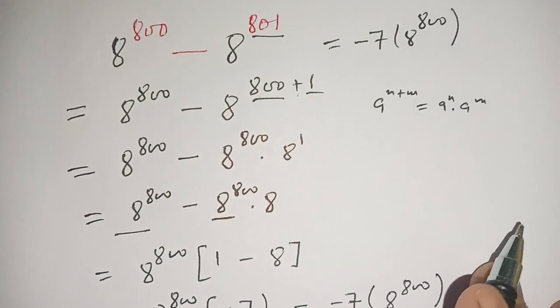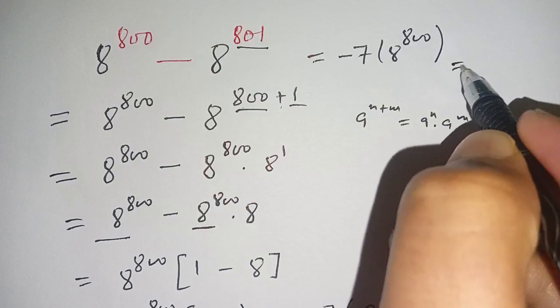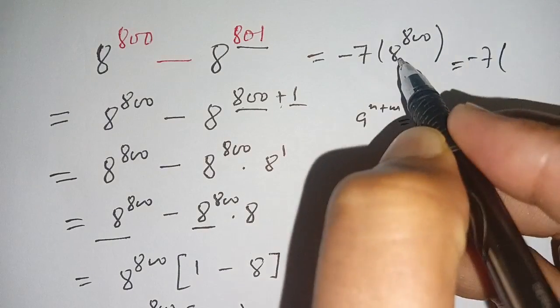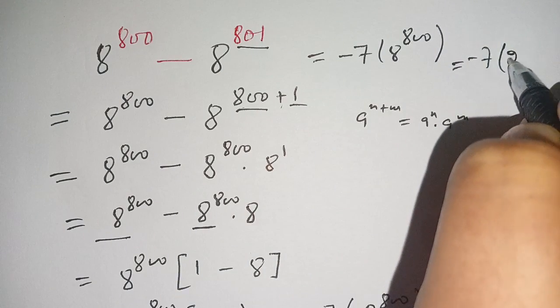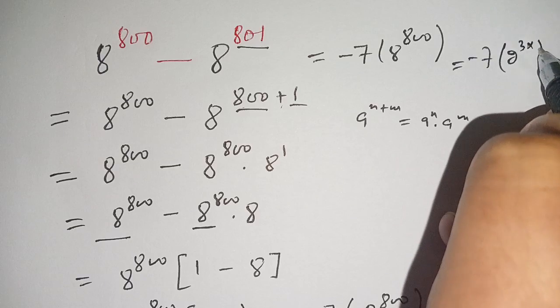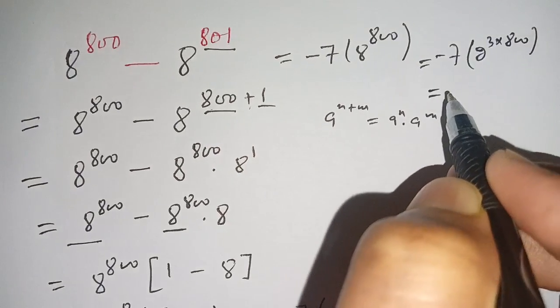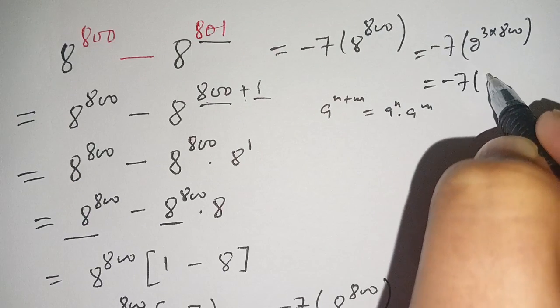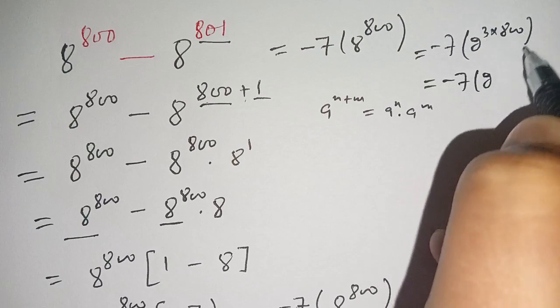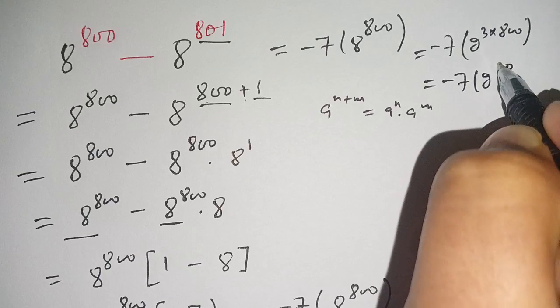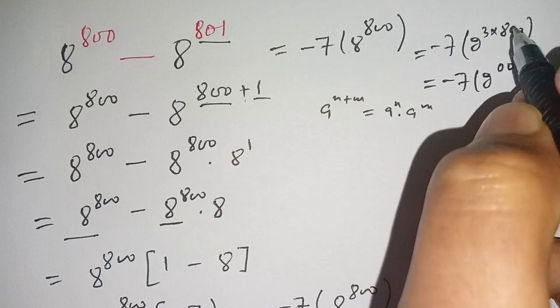We can further simplify this as minus 7 times 8 power 800. Since 8 can be written as 2 power 3, we get minus 7 times 2 power 3 times 800.